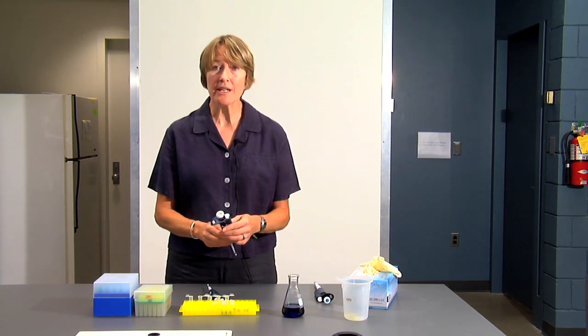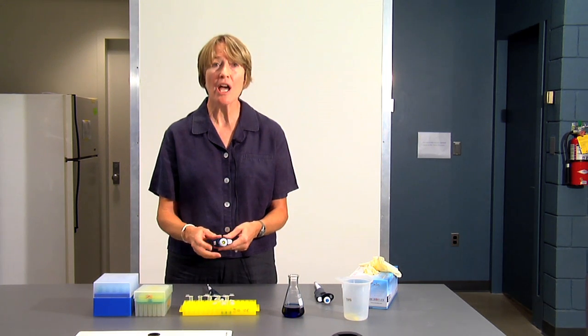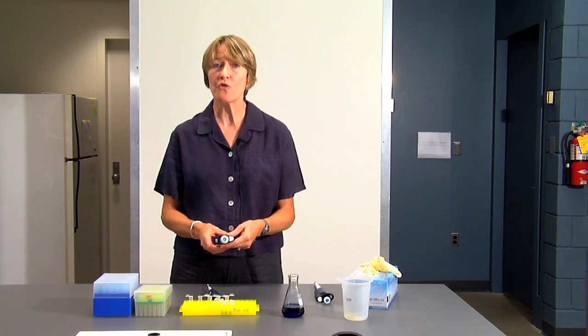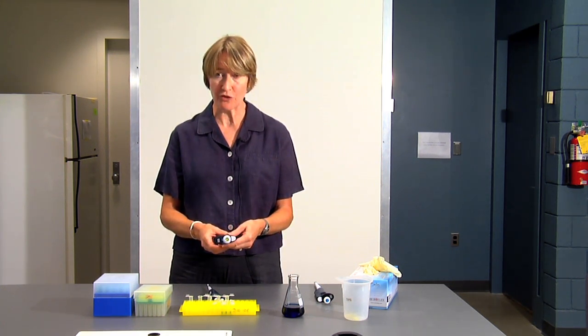We'll also be using a P200. Again, P200 is listed on the top of the plunger. P200s are used for measuring 20 microliters to 200 microliters of fluid.